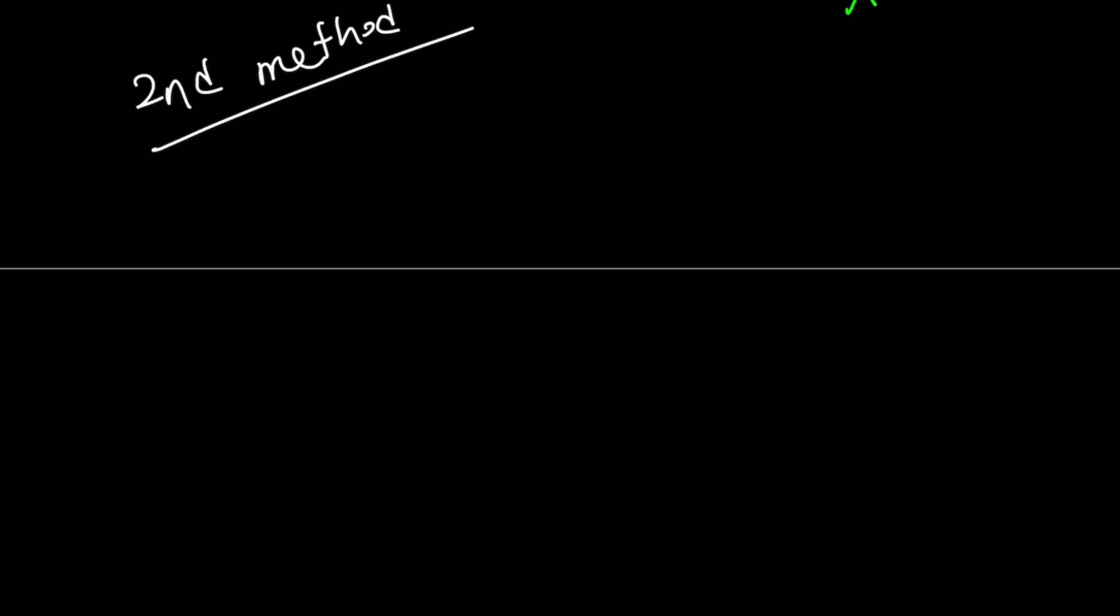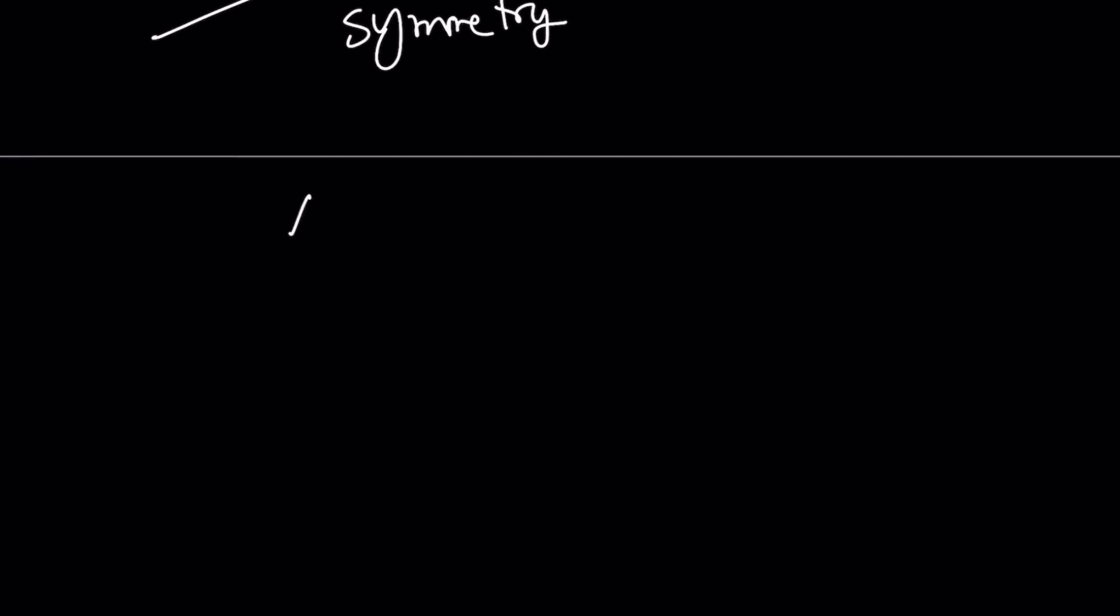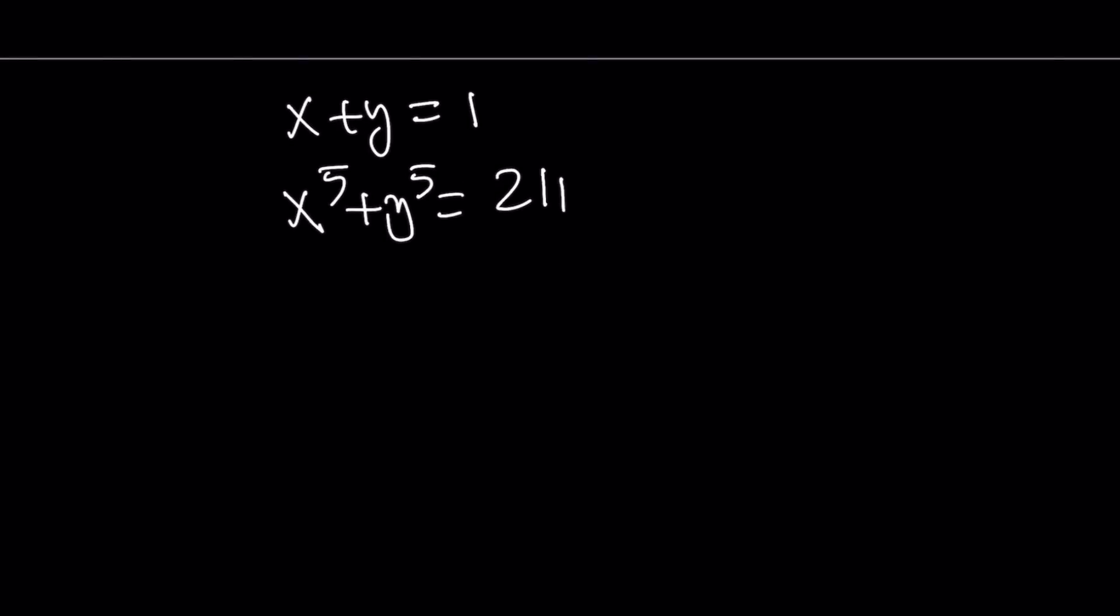For my second method, we're going to take advantage of symmetry. Symmetry is important, especially for these kinds of systems. So I'll rewrite the original one: x plus y equals 1, x to the 5th plus y to the 5th equals 211. And of course you can always guess and check, and if the numbers are not good, then you can't really guess and check. Now here's what I'm going to do. I'm going to work with x plus y equals 1 first.